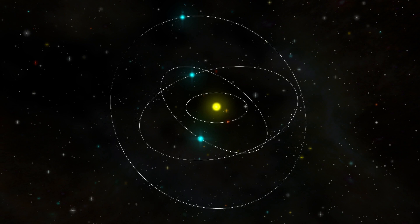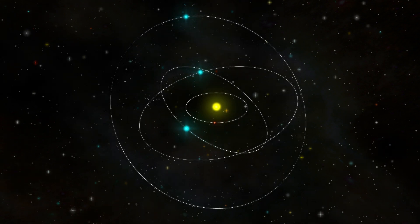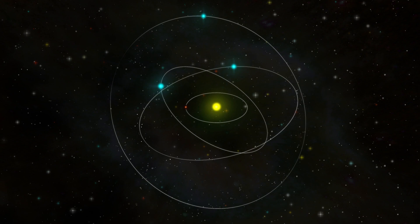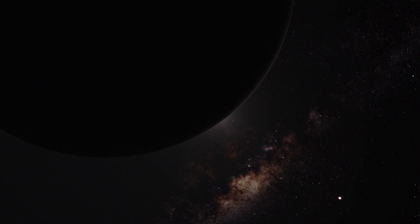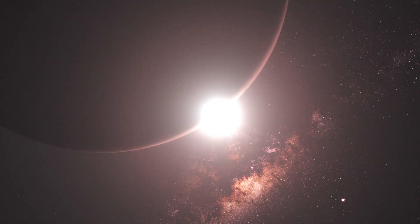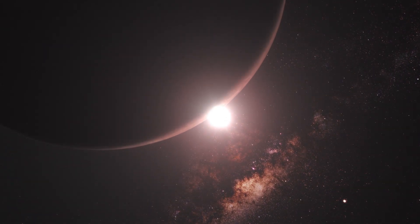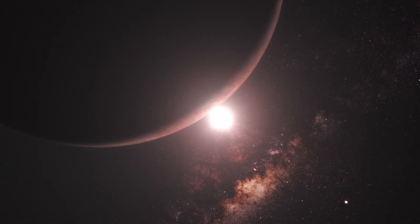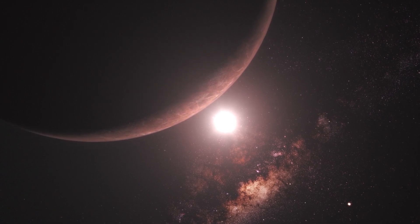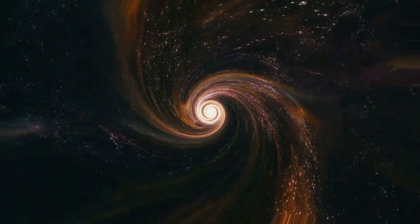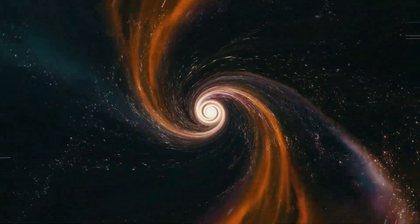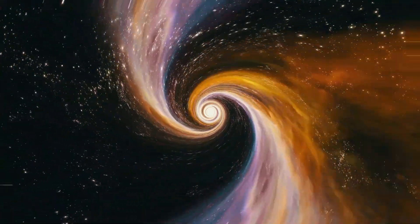What lies beyond the observable universe? To answer that, we must understand what the observable universe really is. It is not the edge of all that exists. It is simply the limit of what we can see. Because the universe is only 13.8 billion years old, light has only had 13.8 billion years to travel. Yet due to the expansion of space itself, the farthest galaxies we can observe today have already moved over 46 billion light-years away.